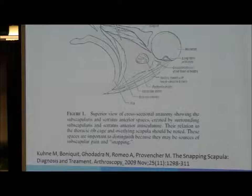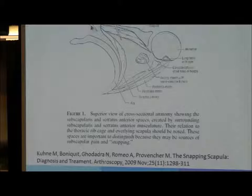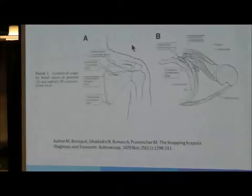There are spaces around the scapula where pathology can be located. In the front, you have the serratus anterior space and the subscapularis space. Within these spaces there are bursa — the subscapularis bursa, scapulothoracic bursa, and scapulotrapezial bursa — and these can become inflamed.